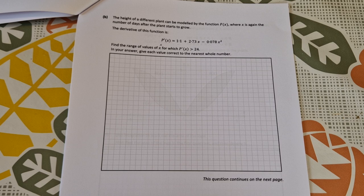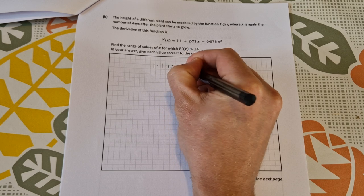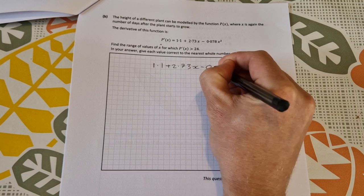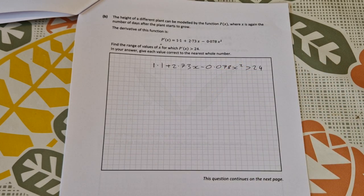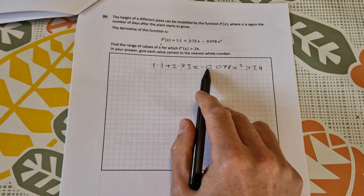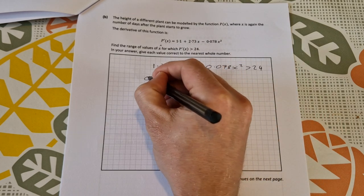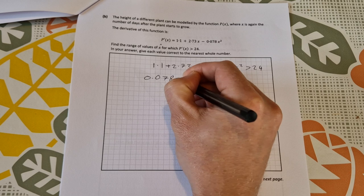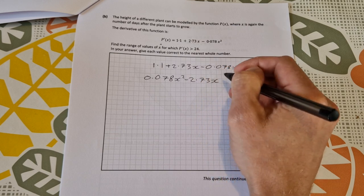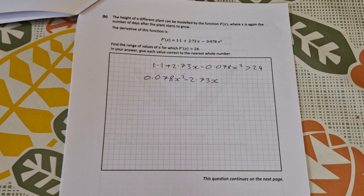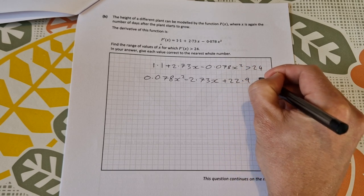So just let this here be greater than 24: 1.1 plus 2.73x minus 0.078x squared is greater than 24. Get everything to one side and write it with a positive leading coefficient as a quadratic. We'll get 0.078x squared minus 2.73x, and then 1.1 minus 24 gives plus 22.9, and that's less than zero.